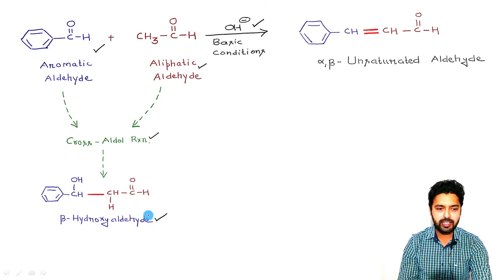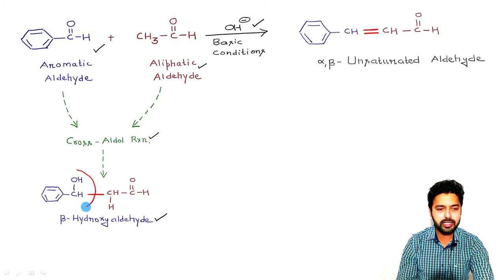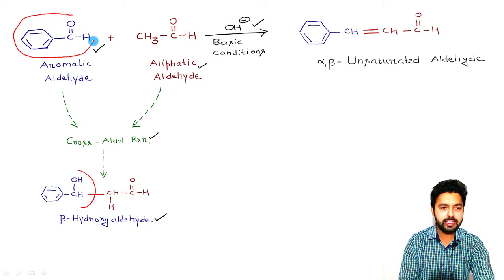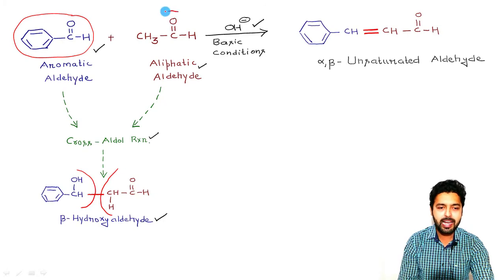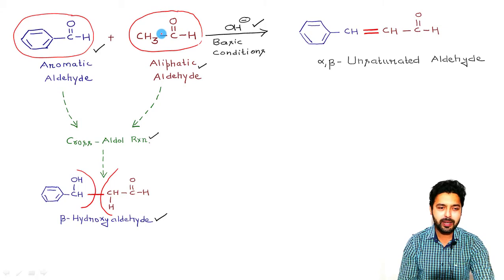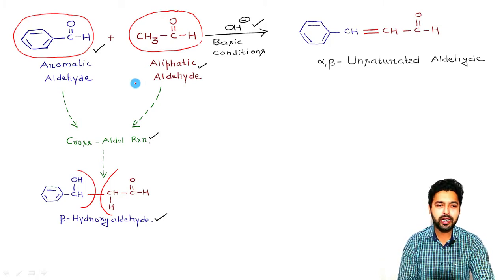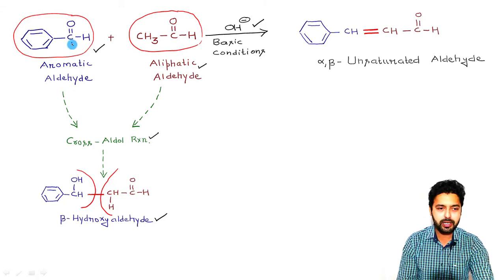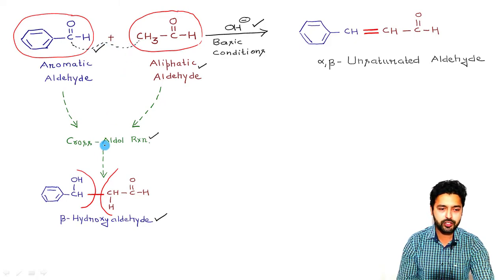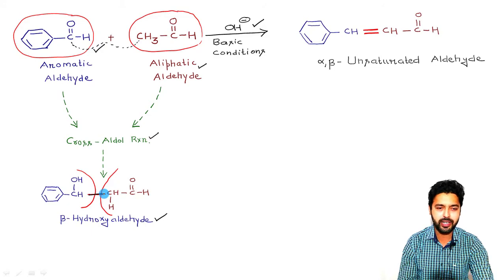In this beta-hydroxy aldehyde, this part is actually coming from the aromatic aldehyde. On the other hand, the second part is actually being derived from this aliphatic aldehyde molecule, which is acetaldehyde in this case. Because of this cross aldol type of reaction, it will result in the generation of a new bond between this carbon atom and this carbon atom here.